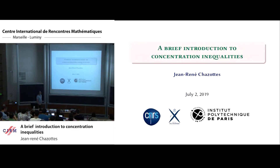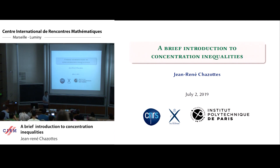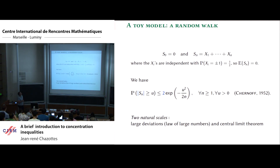I would like to introduce concentration inequalities for dynamical systems. At the beginning I will use this beamer and then switch to the blackboard. My goal is to start with the simplest possible example of the concentration of measure phenomenon, and then go to dynamical systems and show how it translates and all the consequences you can have. Let me start with a toy model: the simplest random walk you can imagine.